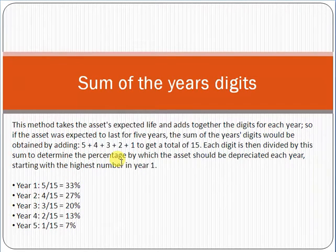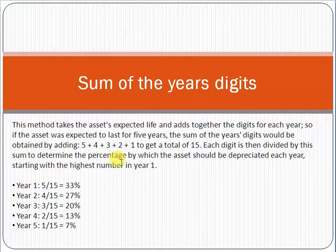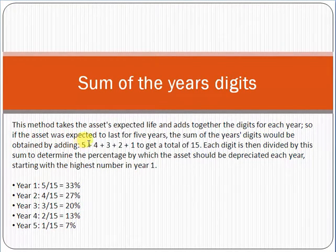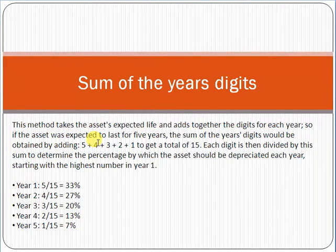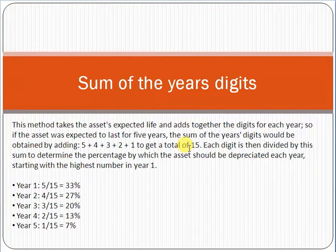The next type of accelerated depreciation is sum of the years digits. It's a straightforward concept. If an asset has a life of five years, you sum the digits: 5 + 4 + 3 + 2 + 1 = 15. The number 15 becomes your denominator. You then divide each year's digit by 15 to determine the depreciation percentage for that year.